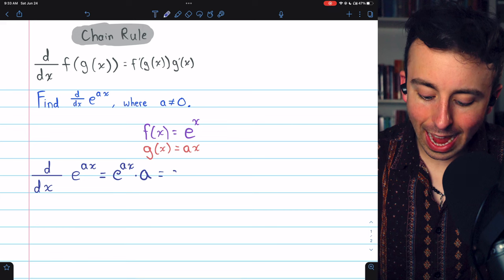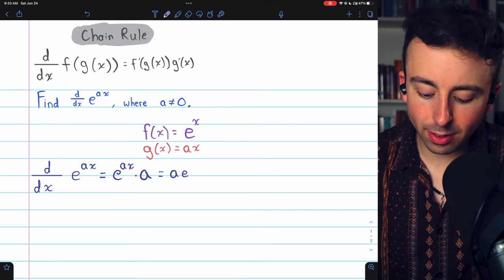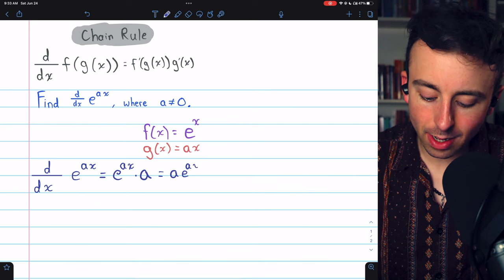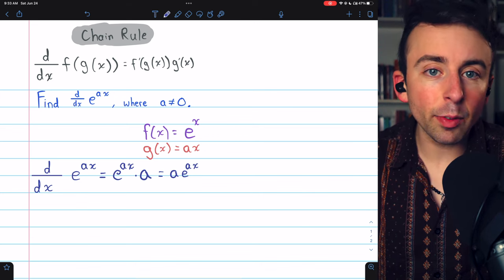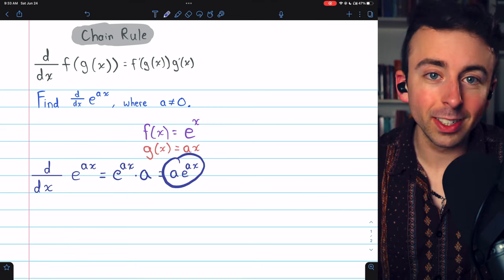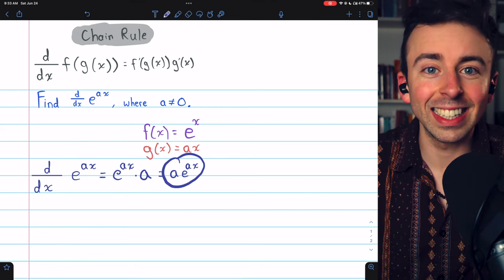So the derivative of e to the ax for any non-zero real number a is simply a times e to the ax. Like we said, if a is zero, then the derivative is zero, and this formula still works, although that is a slightly odd case.